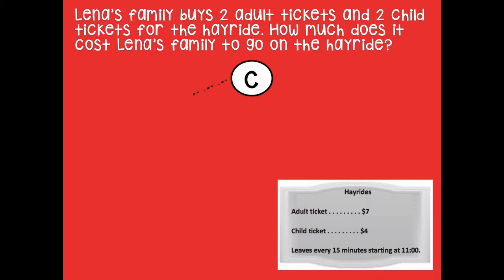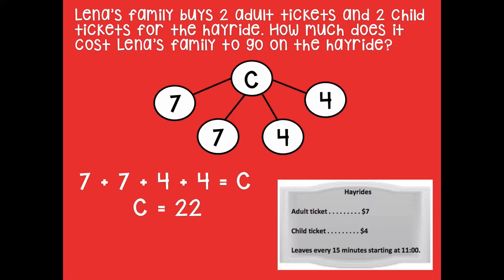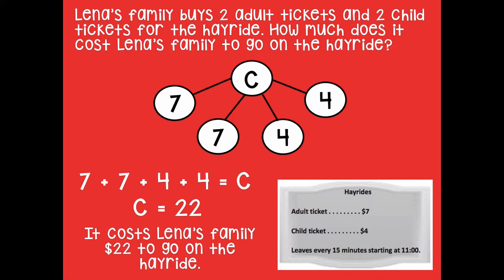I know there are two adult tickets and two child tickets, so I have four tickets total in my number bond. One adult ticket is $7, another adult ticket is $7, and the two child tickets are $4 each. My equation is: 7 + 7 + 4 + 4 = C. Seven plus seven is 14, plus 4 is 18, plus 4 more is 22 — so C equals 22. Now I can write the sentence: It cost Lena's family $22 to go on the hayride.